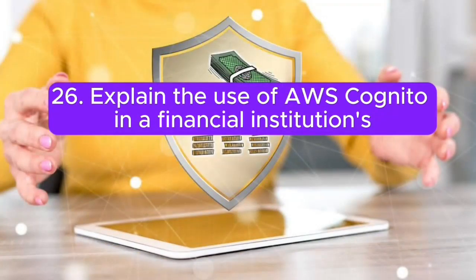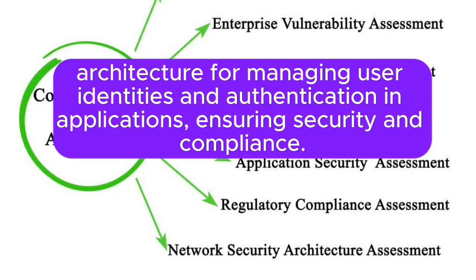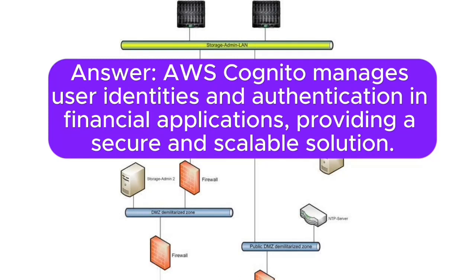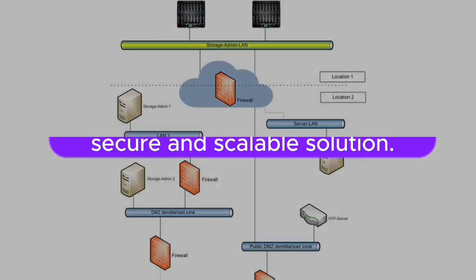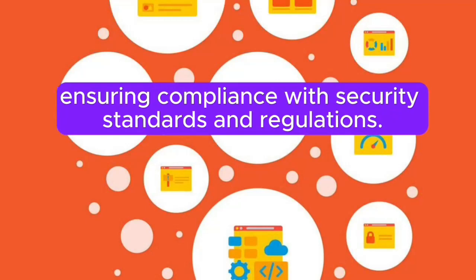Question 26: Explain the use of AWS Cognito in a financial institution's architecture for managing user identities and authentication in applications, ensuring security and compliance. Answer: AWS Cognito manages user identities and authentication in financial institutions, providing a secure and scalable solution. It supports multi-factor authentication, user pools, and identity federation, ensuring compliance with security standards and regulations.